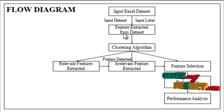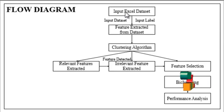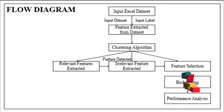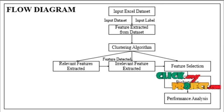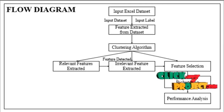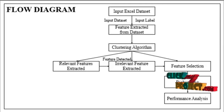Now we discuss about the flow diagram of our project. First is the input Excel dataset. Text mining is the process of identification of relevant text information from the images. The input for processing is a document containing information regarding similar text information. The input document in the format of Excel files is read.